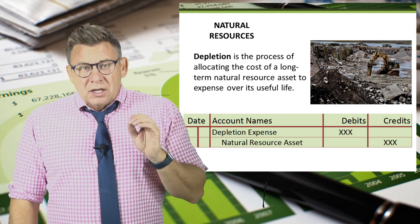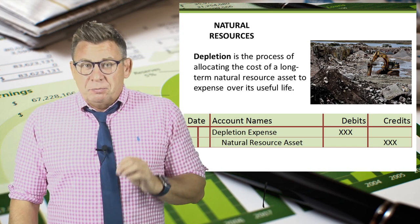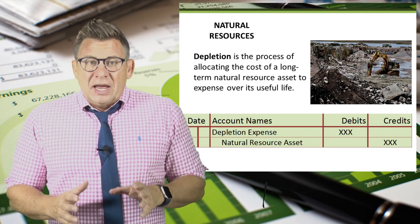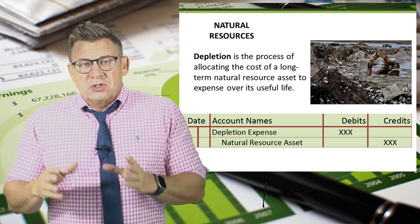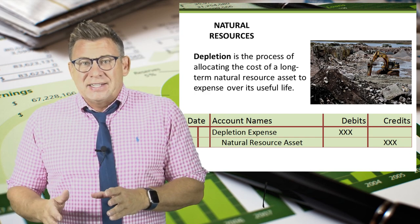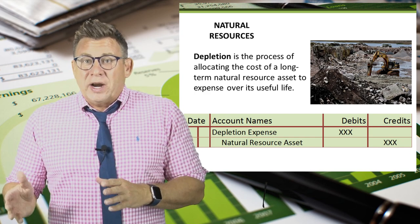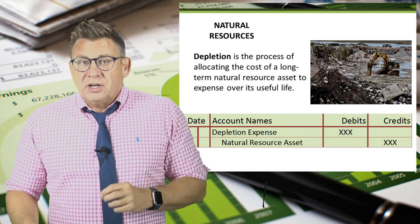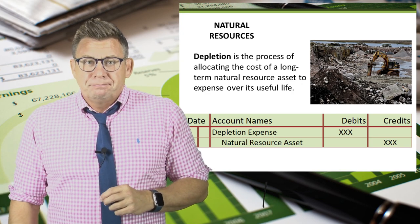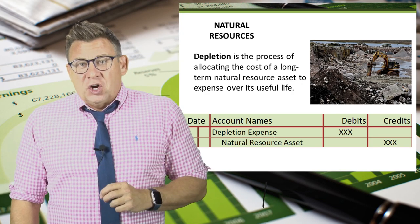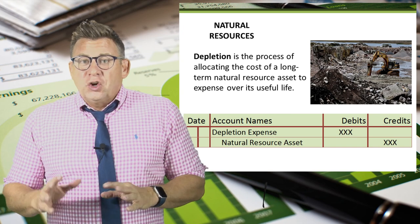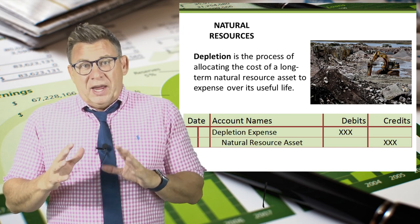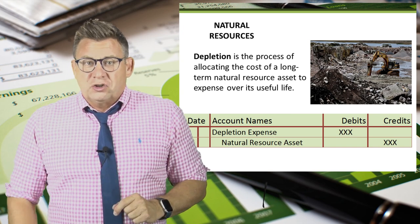Normally, depletion expense is debited and the natural resource asset is credited when depletion is recorded. At the end of the video, I'll show you an alternative way to record this journal entry.